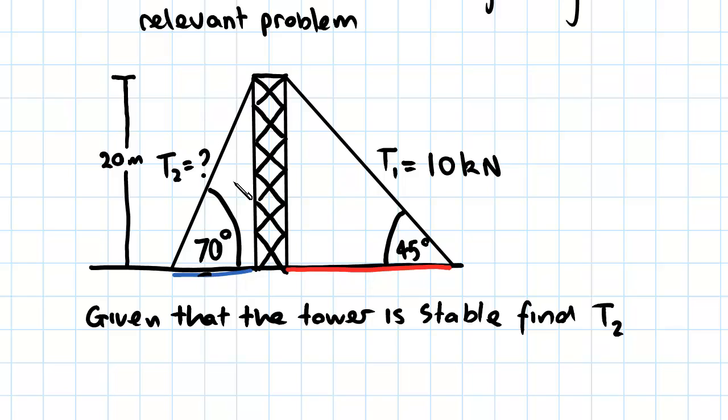We've also been told that the tower is stable and what this means is that the tower isn't rocking back and forth and that effectively means that the force exerted by this cable in the x-direction has to be equal to the force exerted by this cable in the x-direction.